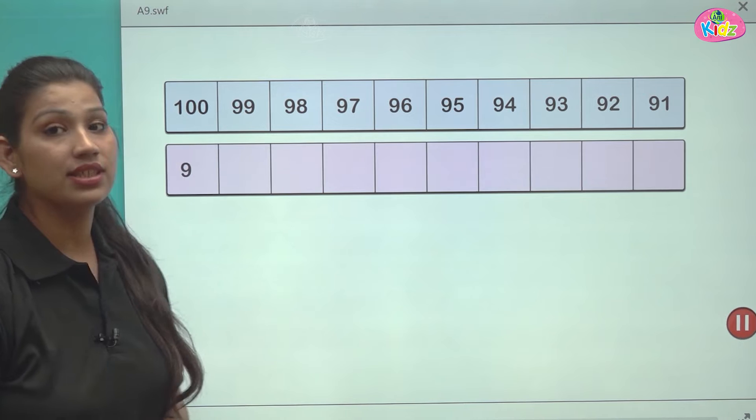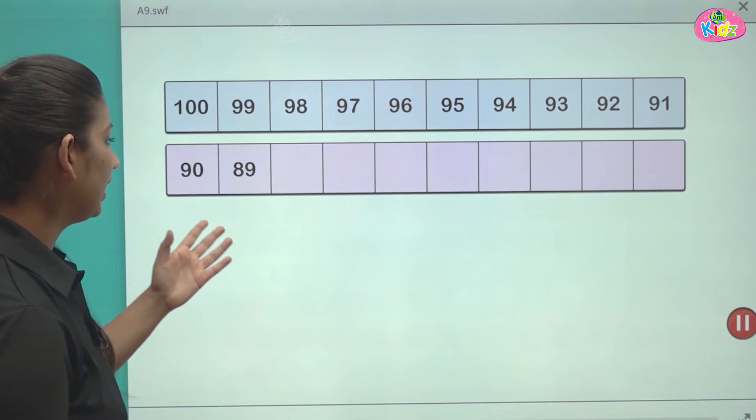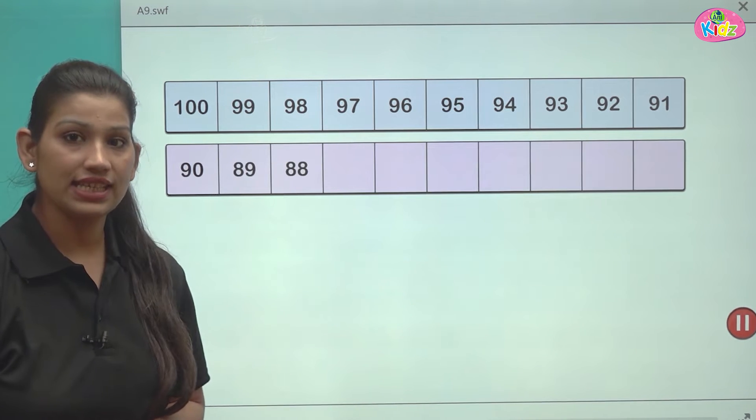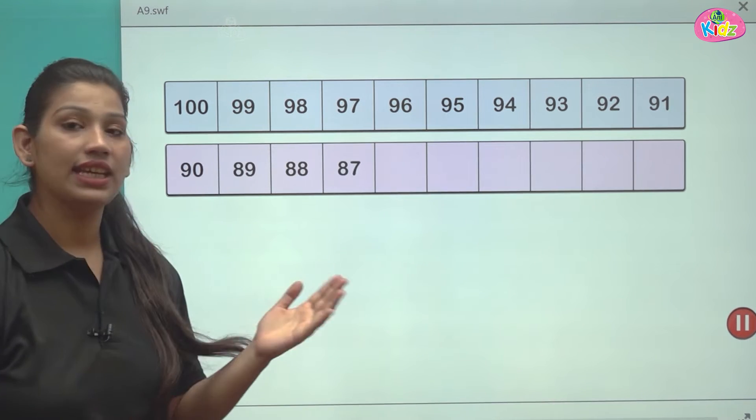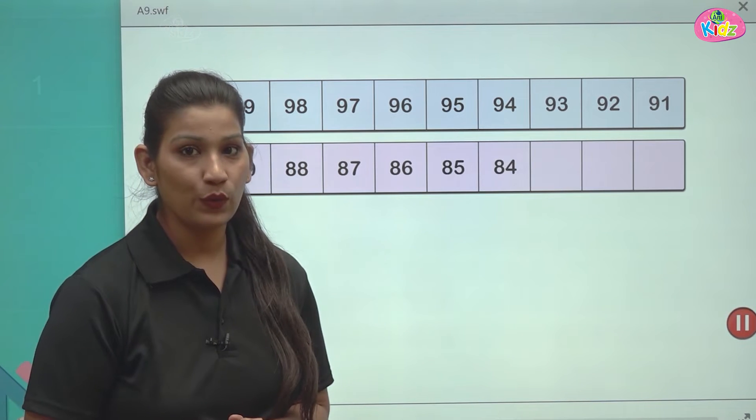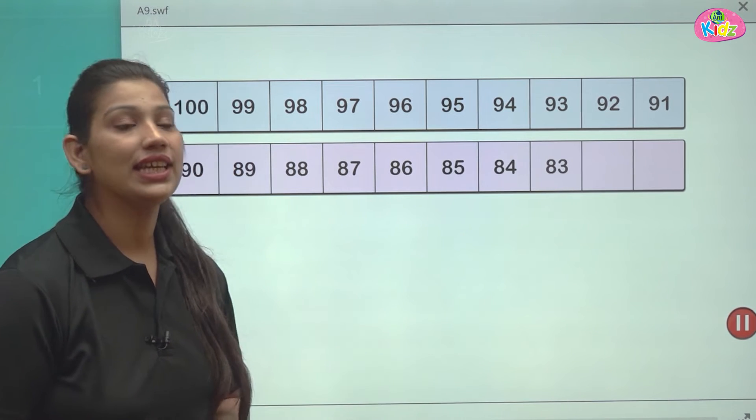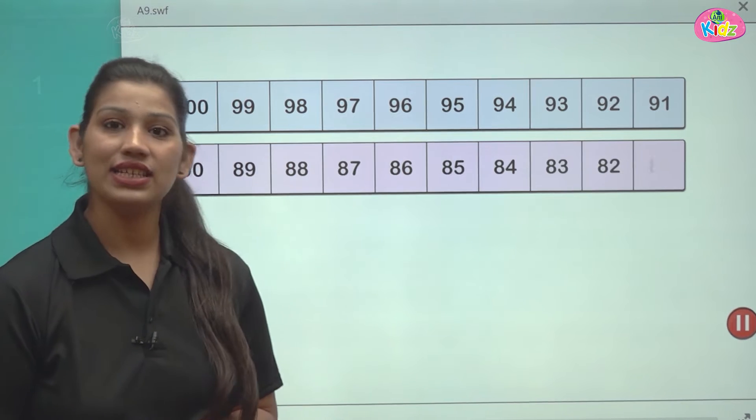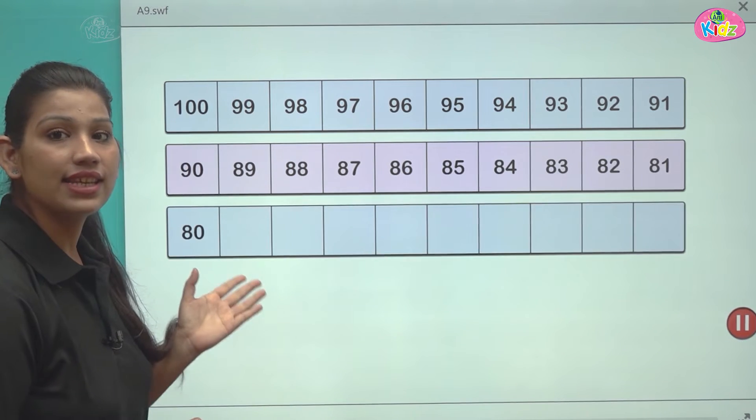After 91, there comes number 90. 89, 88, 87, 86, 85, 84, 83, 82, 81. Then starts 80 series.